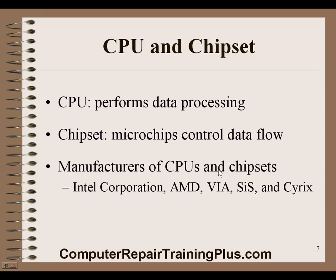Manufacturers of the CPU and chipsets: Intel is the major corporation, with about 80% of the market. AMD has about 10%, and the rest — VIA, SIS, and Citrix — comprise the remaining 5 to 10%.